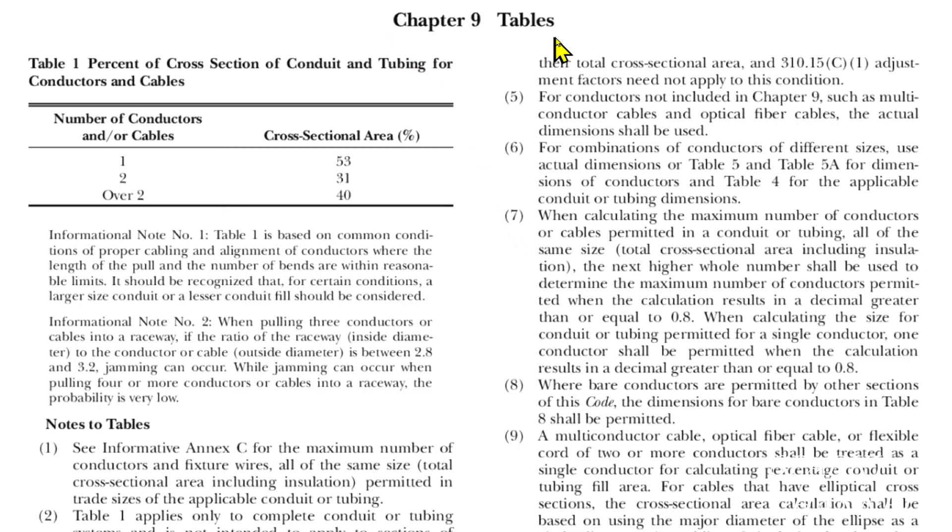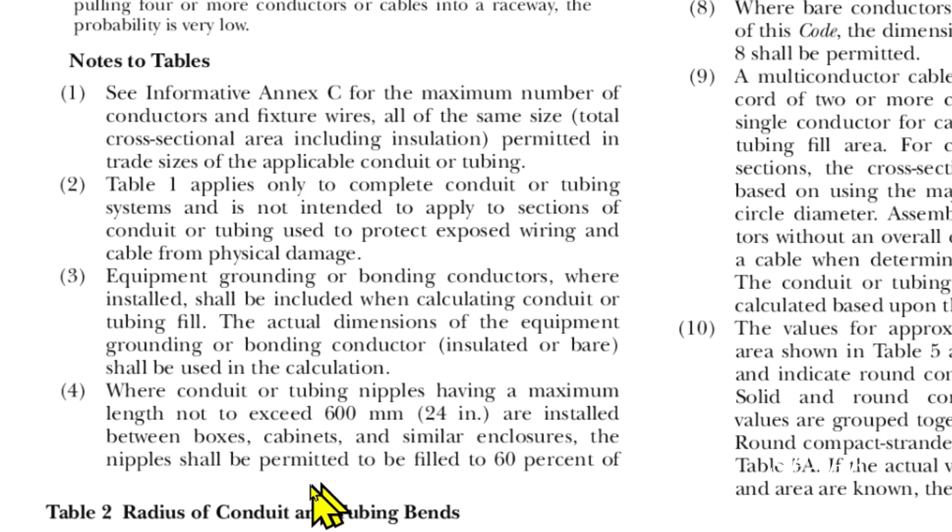This is Chapter 9 Tables from the 2020 NEC code, and Table 1 talks about percent of cross-section of conduit and tubing for conductors and cables.